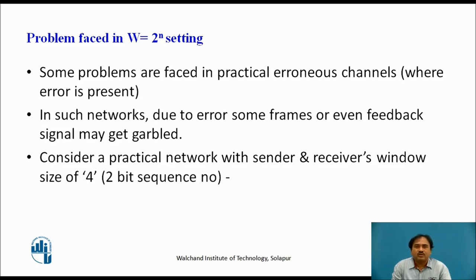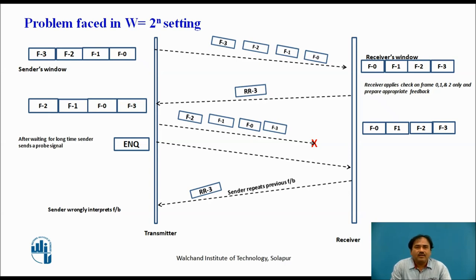Suppose we use a 2-bit sequence number, meaning we are allowed to use a maximum window size of 4. The sender has a window carrying frames F0, F1, F2, and F3, which are sent on the channel. These frames are received by the receiver. As the sequence numbers fall within the legal window size at the receiver, those frames are accepted. The receiver applies error control checks and plans for feedback. Suppose he gives feedback after checking frames 0, 1, and 2, so he sends the feedback as RR3. The number 3 confirms that frames 0, 1, and 2 are received successfully.